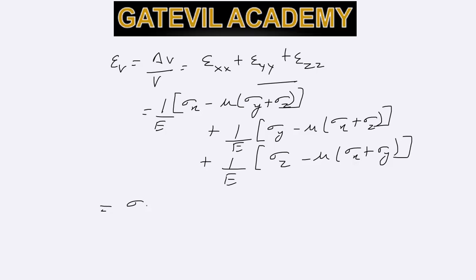Summation of these will give you sigma x plus sigma y plus sigma z by e, 1 by e into 1 minus 2 mu.